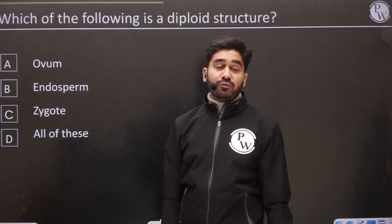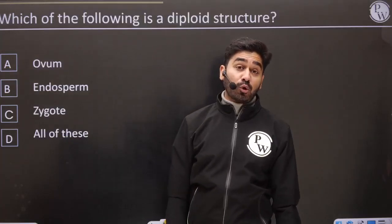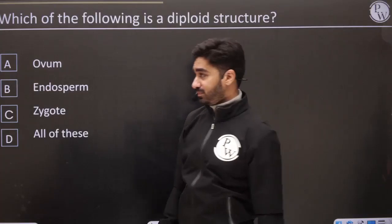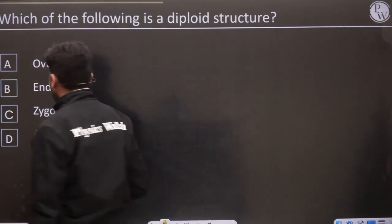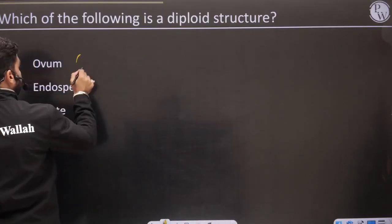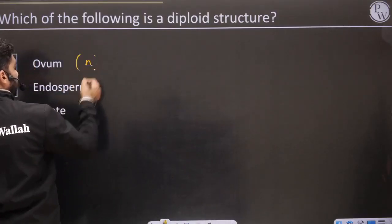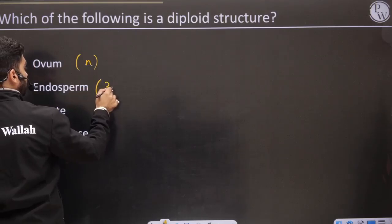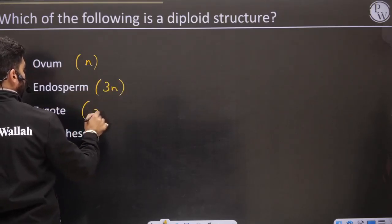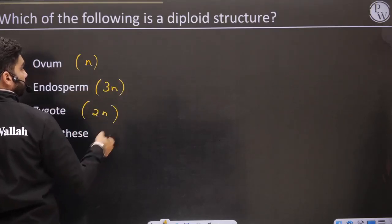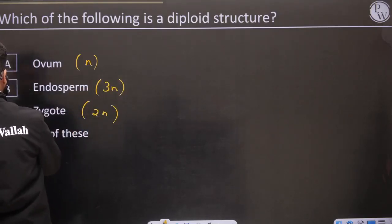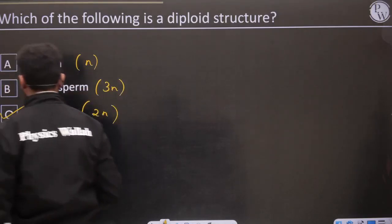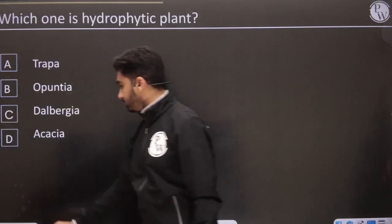Which of the following is the diploid structure? Ovum (egg) is haploid. Endosperm is triploid. Zygote is 2N — diploid. So the 2N structure is the zygote.